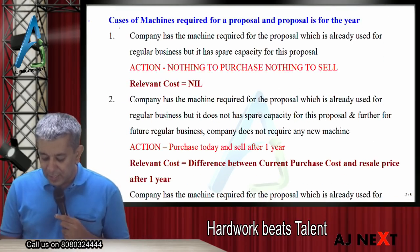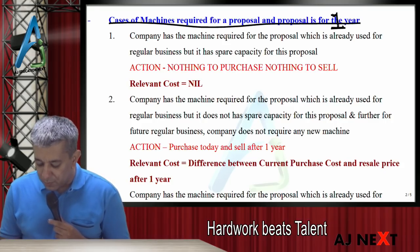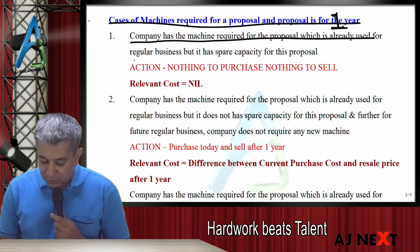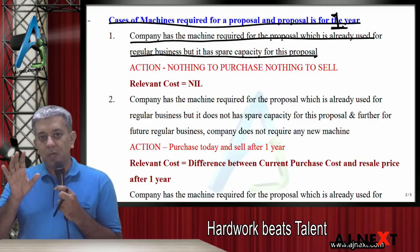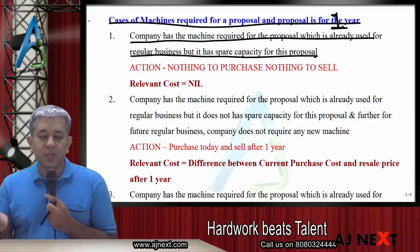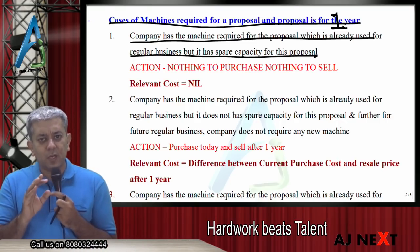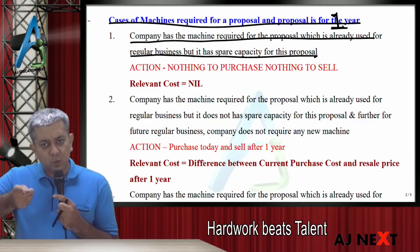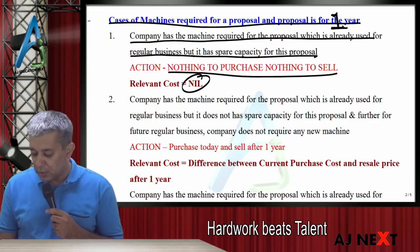Cases of machines required for a proposal where proposal is for one year. Case 1: Company has a machine required for the proposal which is already used in regular business, but it has spare capacity for this proposal. Tereh paas machine tha, use ho raha tha regular business ke liye, ek offer aagaya, us offer ke liye bhi machine chahiye, lekin machine ke paas spare capacity tha. Kya kuch khariidne ka baat hai? No. Kya kuch bechne ka baat hai? Nahi. Toh relevant cost kitna ho jayega? Zero. Action: nothing to purchase, nothing to sell.